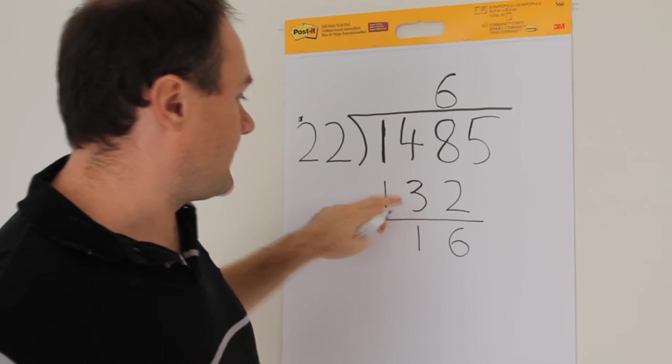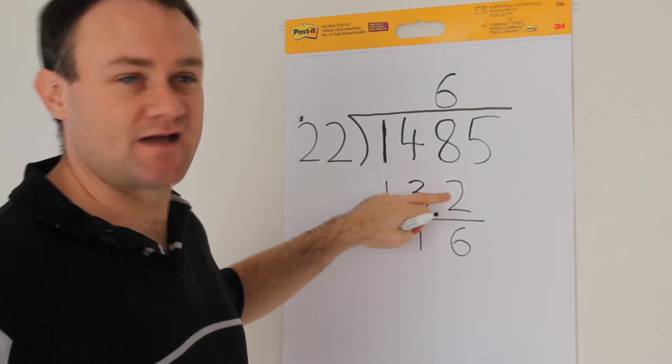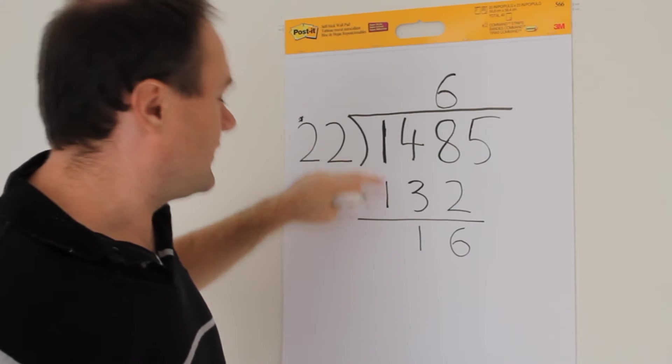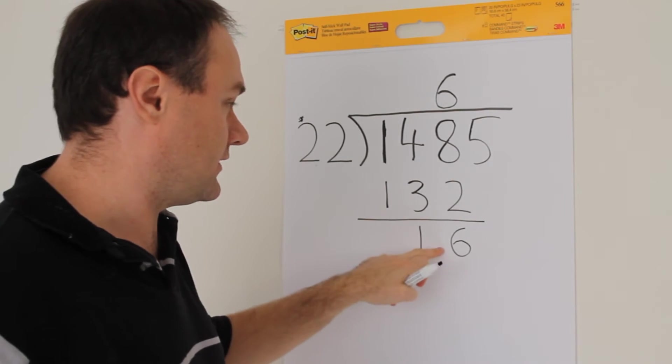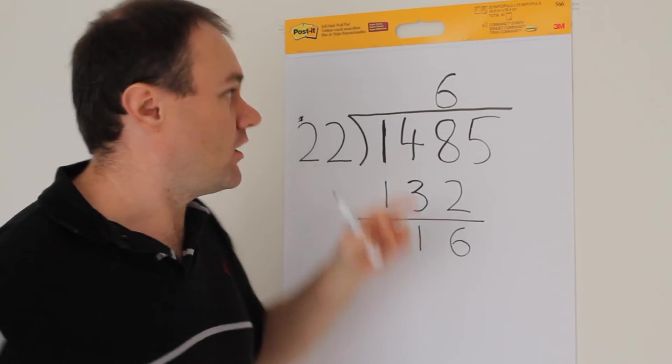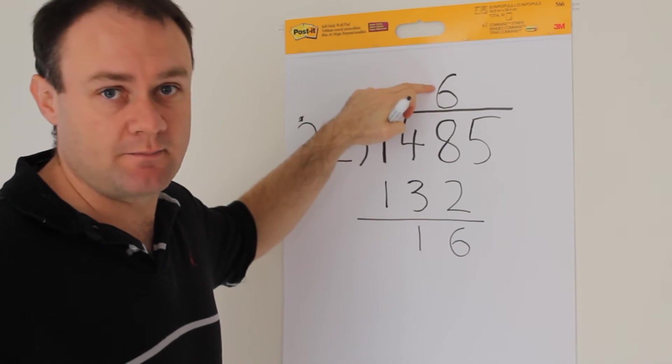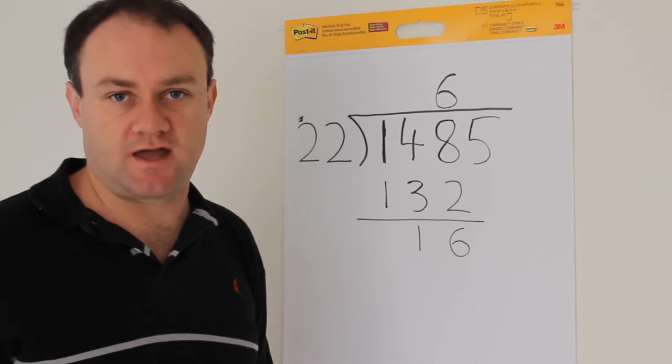Of course, if this number here is higher than this number here, in other words, if we were going to get a negative result here, then we'd have done the opposite. We'd have chosen too big a number here. And then you just go back and refine your guess. You might have to cross it all out and start it again, and that's fine.